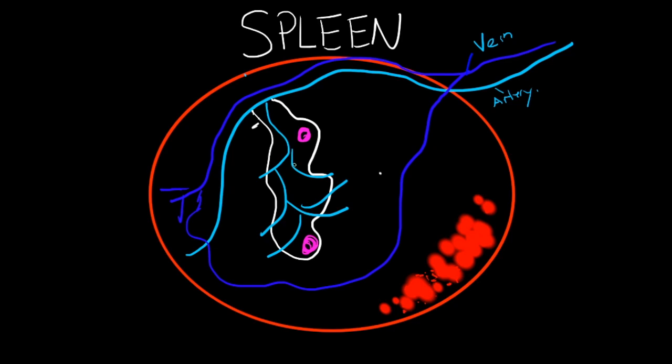The interdigitating dendritic cells are trapping bloodborne pathogens that are coming from the artery. The bloodborne pathogens are traveling in the artery. You're going to have dendritic cells right here.